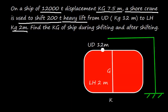On a ship of 12,000 ton displacement, KG 7.5 meter, a shore crane is used to shift 200 ton heavy lift from upper deck that is 12 meter to lower hold that is 2 meter. We need to find the KG during shifting and after shifting.